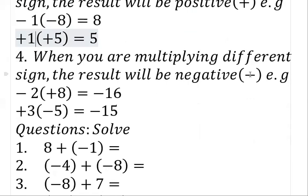Rule number four: when you are multiplying different signs, the result will be minus. For example, minus two times eight gives sixteen, but because they are different signs the answer will be minus sixteen. Also, plus three times minus five — the signs are different, so three times five is fifteen and the result will be minus fifteen. Once you are multiplying different signs the answer will be minus; once you are multiplying the same sign the answer will be plus.